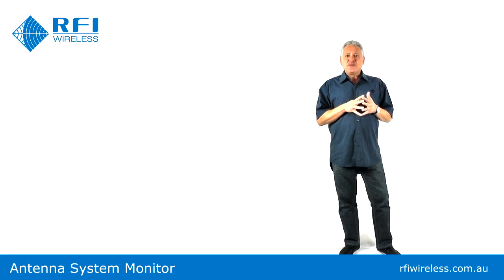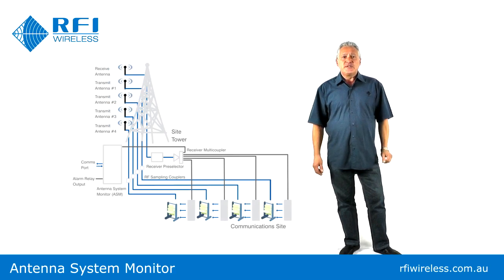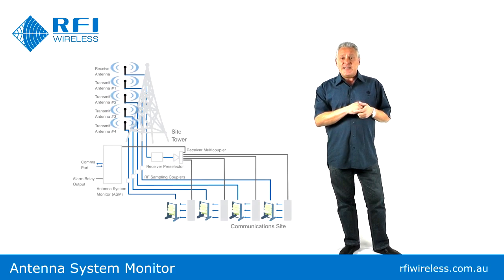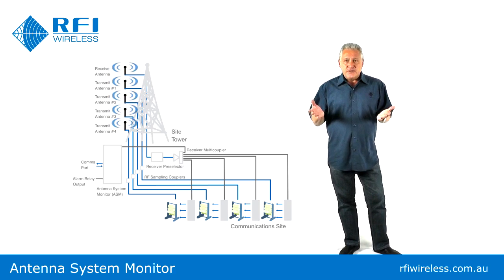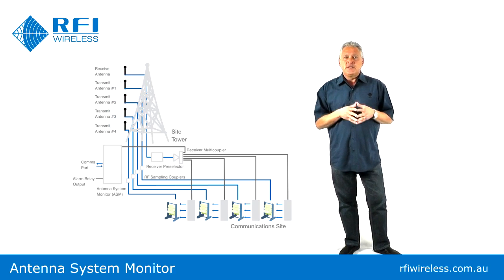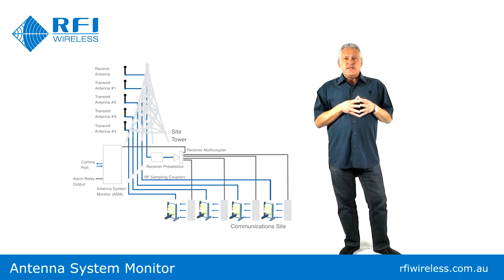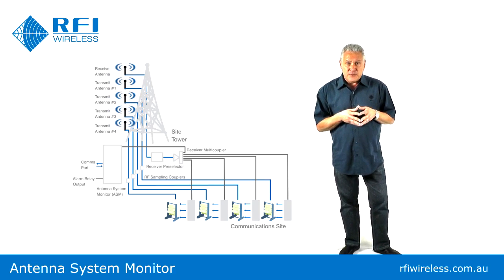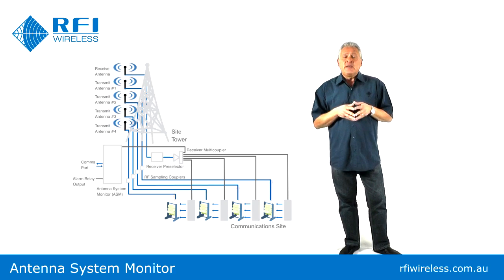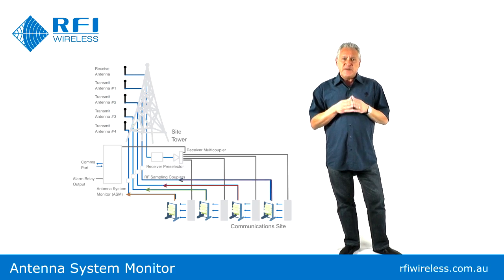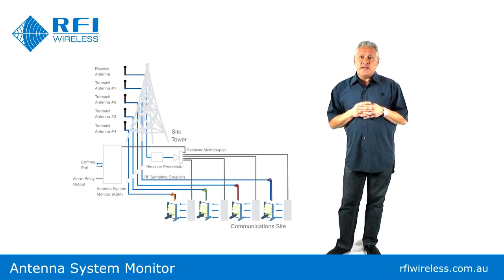The transmit measurement capabilities of the ASM extend to large, diverse communication networks. Since it is equipped to measure up to 80 individually programmed channels, it is able to measure any combination of 25kHz and 12.5kHz spaced channels within its operational bandwidth. Any combination of legacy analogue and digital modulation schemes are also supported, regardless of the crest factor of the latter. And it is equipped with four separate transmit monitoring ports, enabling the monitoring of not just one, but four separate transmit antenna networks at a site.